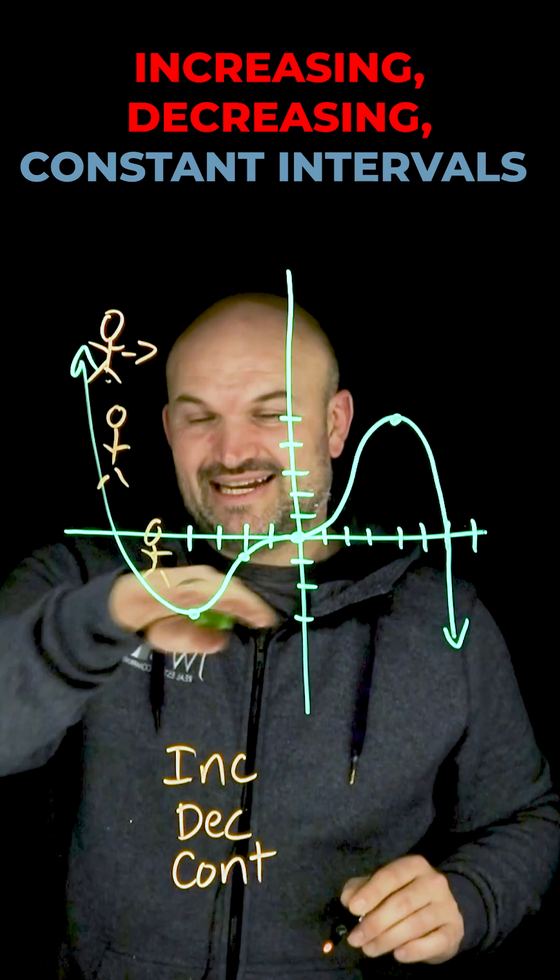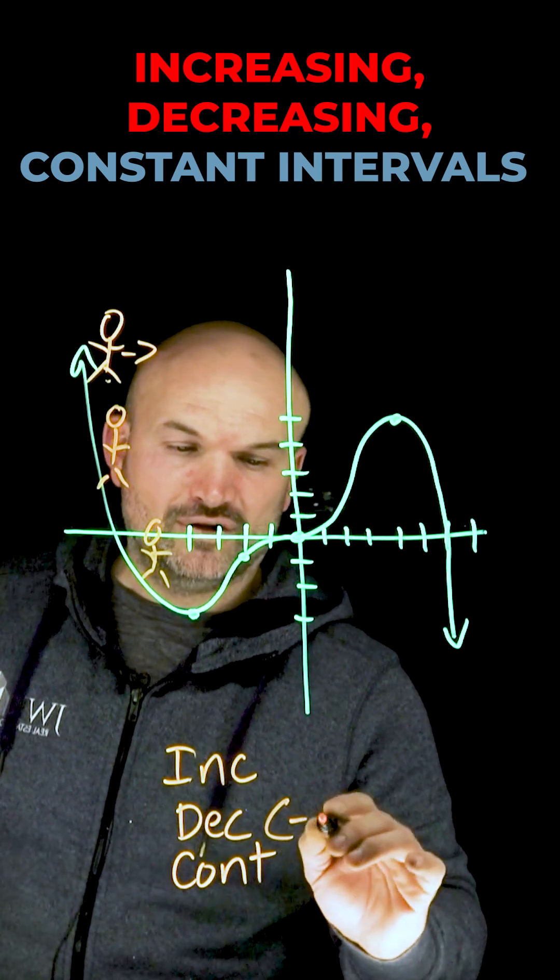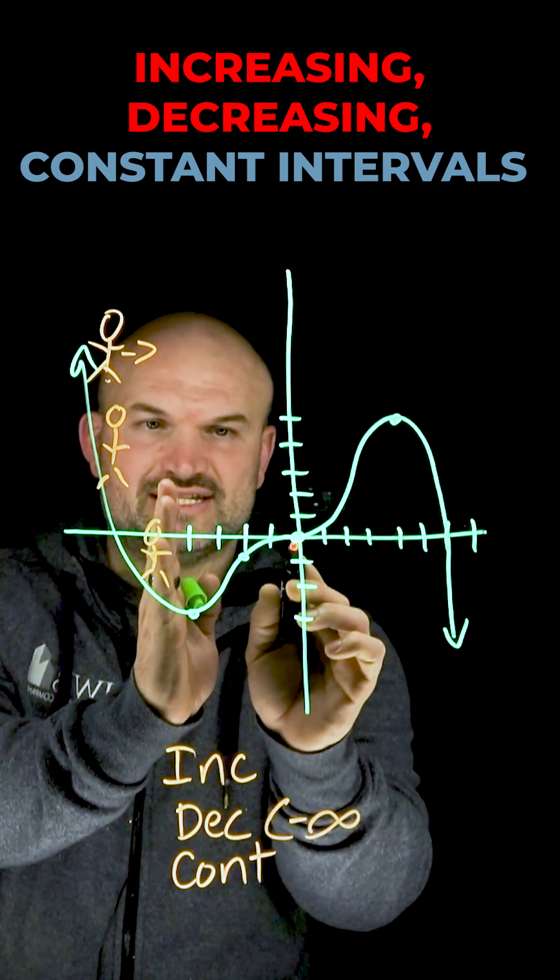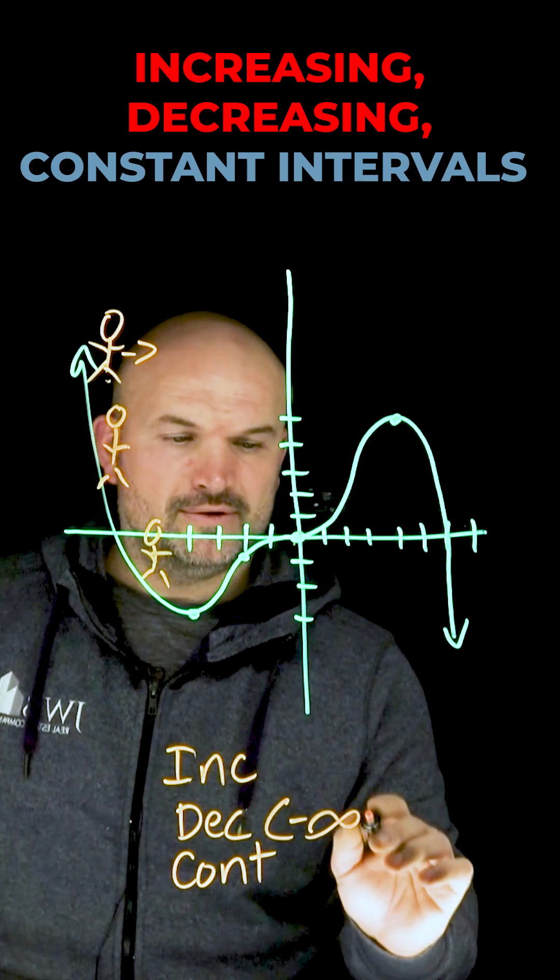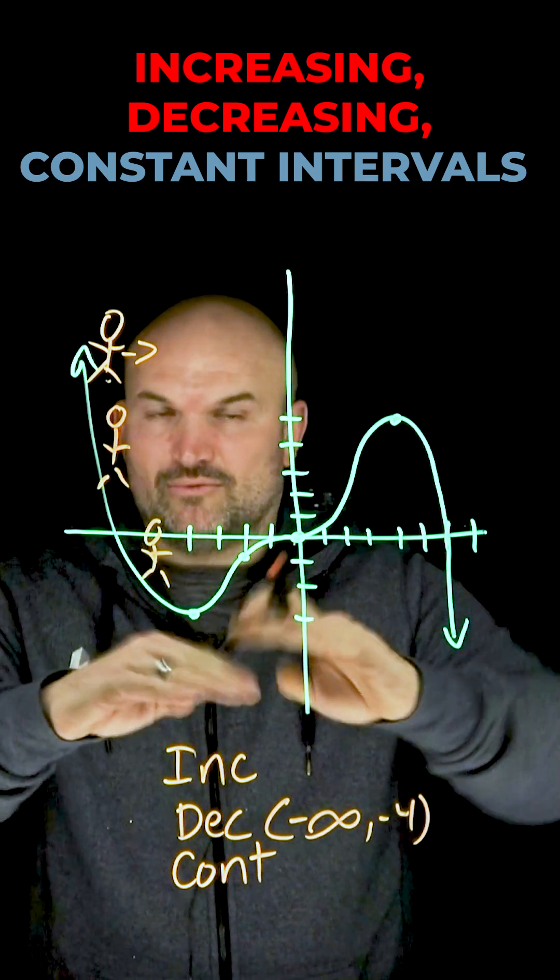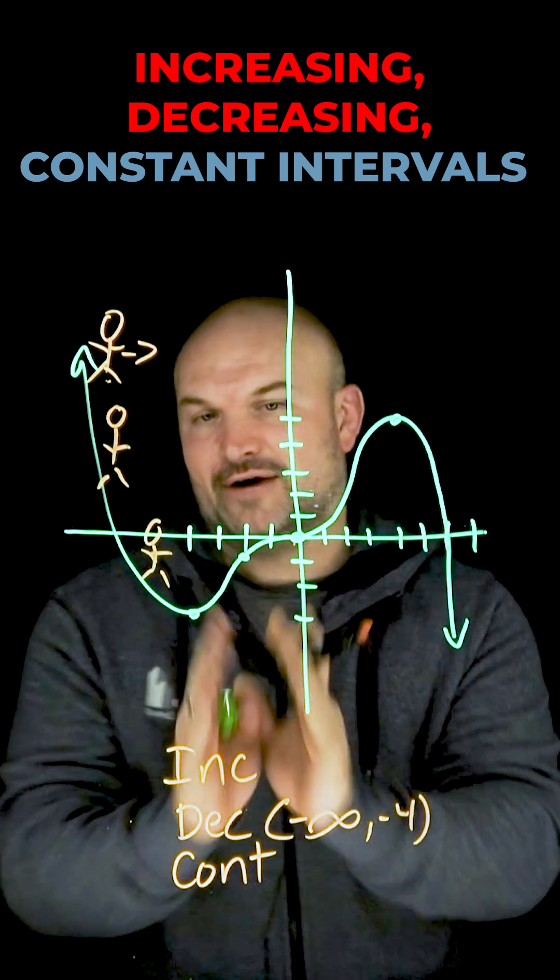Therefore, we can say this person is decreasing on the interval negative infinity, because we've got to start somewhere, all the way to the horizontal distance of 1, 2, 3, 4. And we're not going to include this negative 3. We're not talking about the horizontal. We're always talking about the x intervals that this graph is going down.